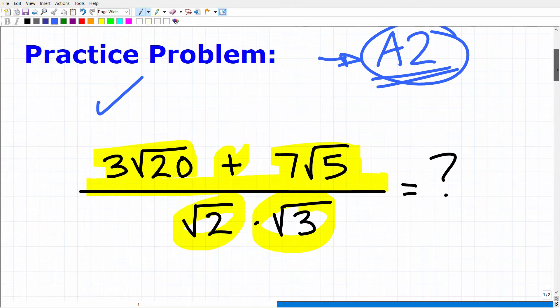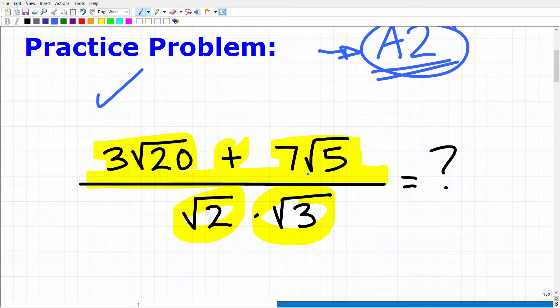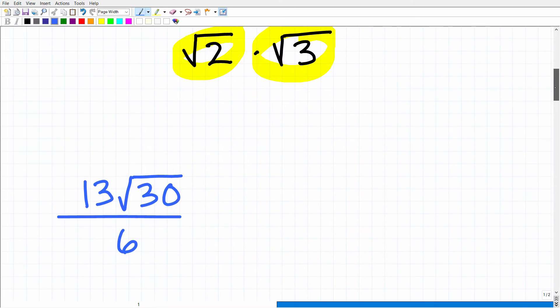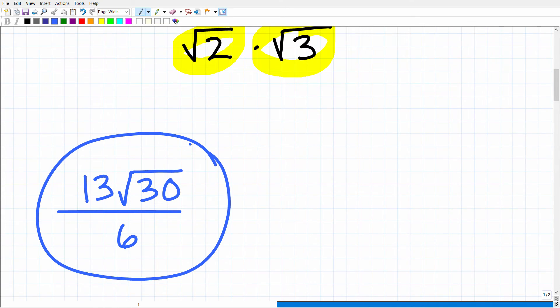So again, we have 3 square root of 20 plus 7 square root of 5 over square root of 2 times the square root of 3. What is this all equal to? Well, this is the correct answer. Okay, so 13 times the square root of 30 over 6.